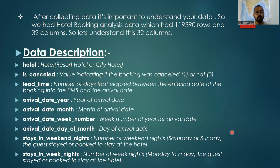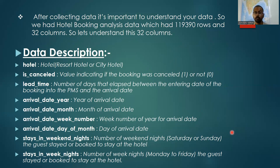Let's see what our CSV file contains. After collecting data, it's important to understand it. Our hotel booking dataset had 119,393 rows and 32 columns, which describe the data of city and resort hotels.